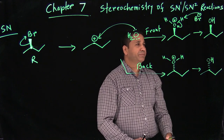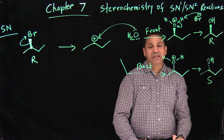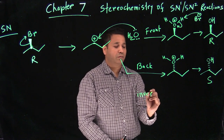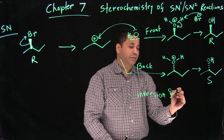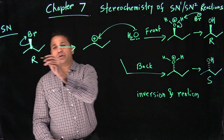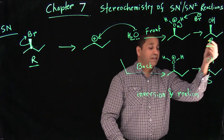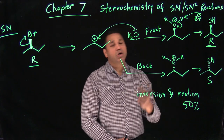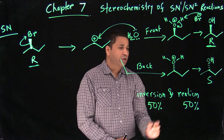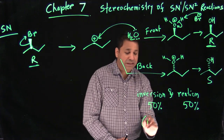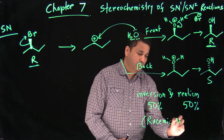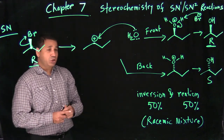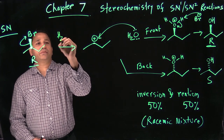So in SN1 you get a mixture of products: 50% R and 50% S. You get both inversion and retention — starting material is R, one product is S (inversion) and the other is R (retention). When you have a 50/50 mixture of R and S, we call that a racemic mixture. So SN1 gives a racemic mixture of products.